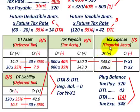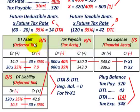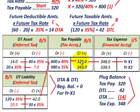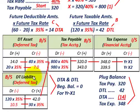Your tax expense is simply a plug between whatever your tax payable is — the current amount of tax due — and whatever is going on in your deferred tax asset and deferred tax liability accounts, which are included as either an increase or reduction to your tax payable. Tax expense is simply a plug or balance between your tax payable, deferred tax asset, and deferred tax liability.